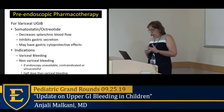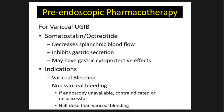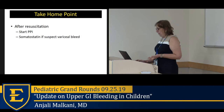For variceal upper GI bleeds, we use octreotide — an analog of somatostatin — which decreases blood flow in the splanchnic circulation, reducing portal pressure and GI bleeding. It may also inhibit gastric secretion and have cytoprotective effects. We typically give it for known variceal bleeding. If endoscopy is unavailable, contraindicated, or unsuccessful, octreotide can also be used for non-variceal bleeds at half the dose. Take-home: after resuscitation, start PPI and octreotide if variceal bleeding is suspected.